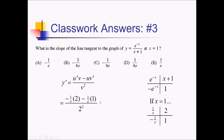Simplifying: in the numerator we've got negative 2 over e minus 1 over e, which is negative 3 over e. In the denominator we've got 4. Same change flip: negative 3 over e times 1 fourth gives us negative 3 over 4e, which matches answer choice B.